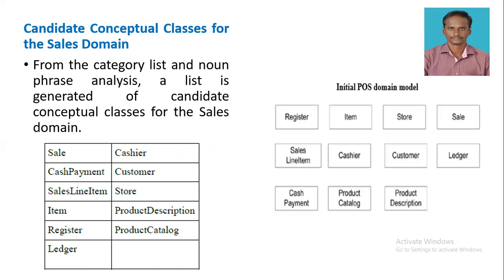The candidate conceptual classes for the sale domain, derived from both the category list and noun phrase analyses, include: sale, cash payment, sale line item, item, item register, ledger, cashier, customer, store, product description, and product catalog. These have been highlighted in the right-hand side diagrams showing the conceptual classes for the sales domain. Thank you for watching this lecture series.